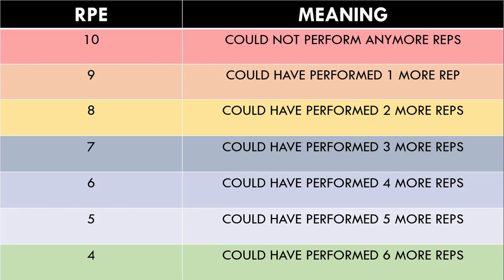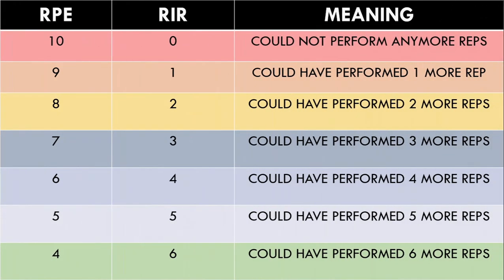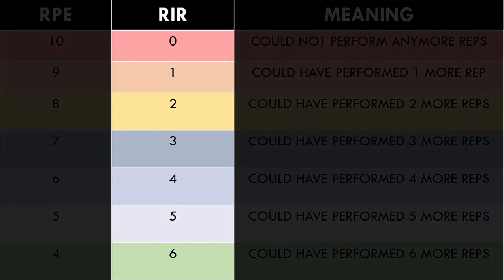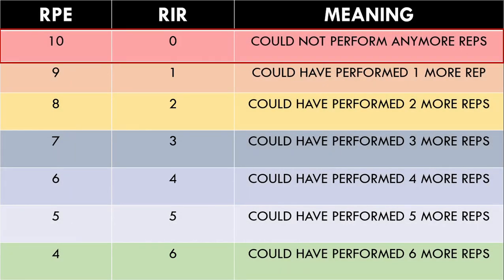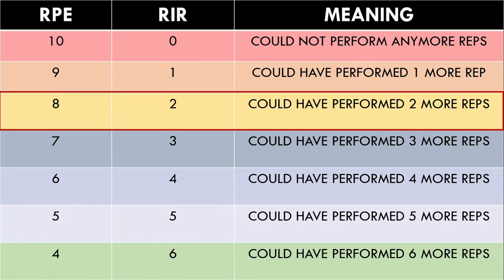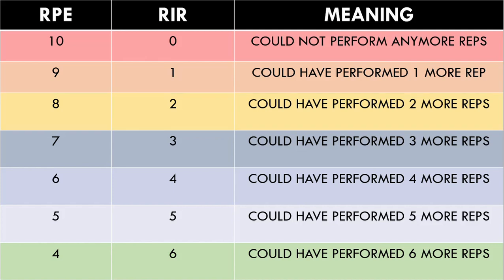Another system which classifies reps before failure is the Reps in Reserve, or RIR, scale. The RIR scale rates reps before failure opposite to the RPE scale. An RIR of 0 means no more reps could have been performed. An RIR of 1 means one more rep could have been performed. An RIR of 2 means two more reps could have been performed, and so on. Both methods work identically well and either can be used by the coach or trainee with no difference between them.